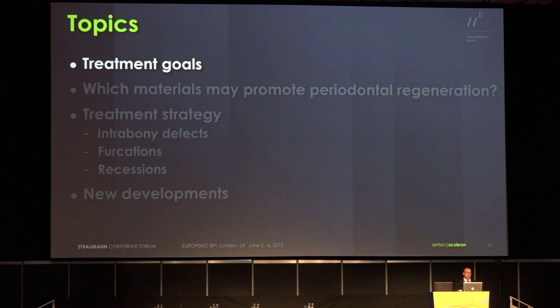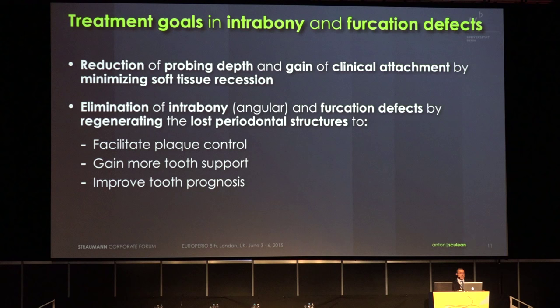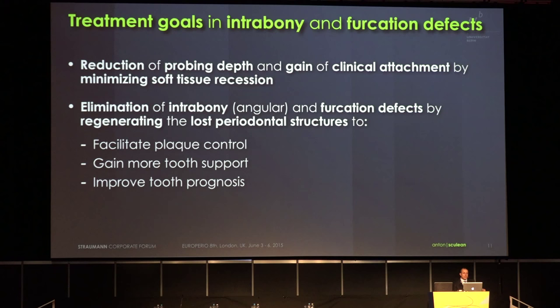Which are our treatment goals? Clinically, we would like to reduce deep pockets — that means pockets less than 4 millimeters after our treatment — and to gain clinical attachment while minimizing soft tissue recession. We would like to eliminate intrabony or angular defects and furcation defects, not via a resective approach, but by regenerating the lost periodontal structures, in order to facilitate plaque control, gain more tooth support, and improve long-term tooth prognosis.